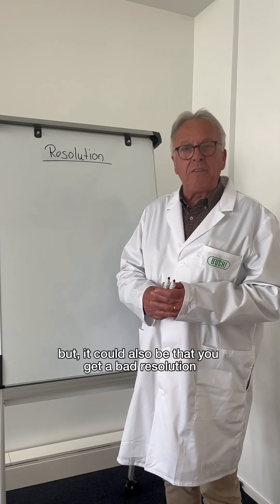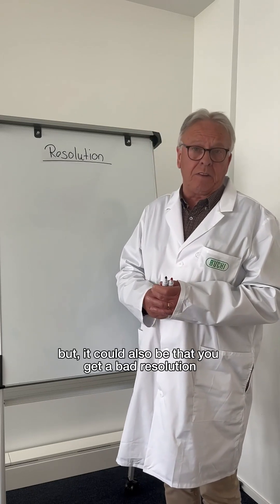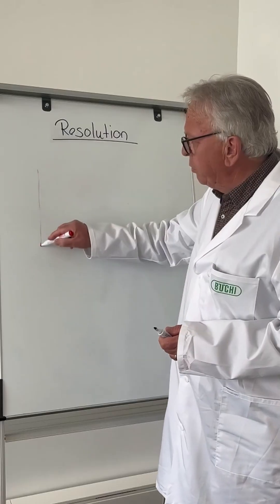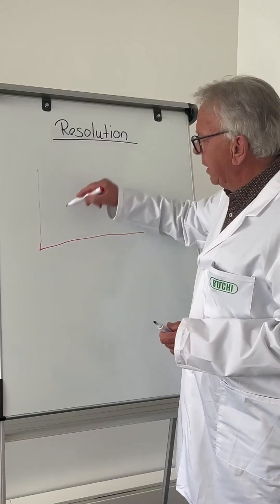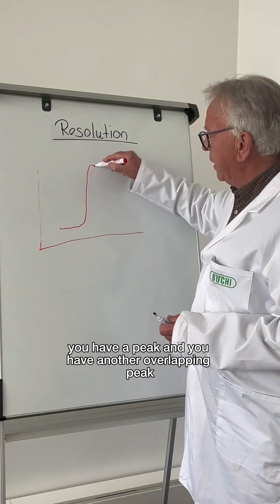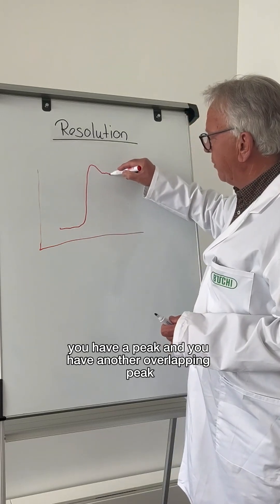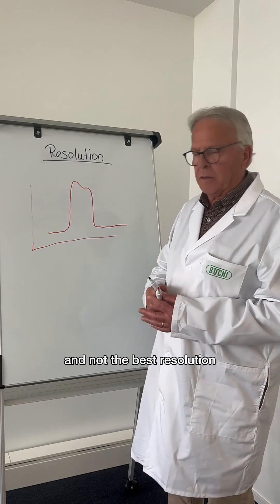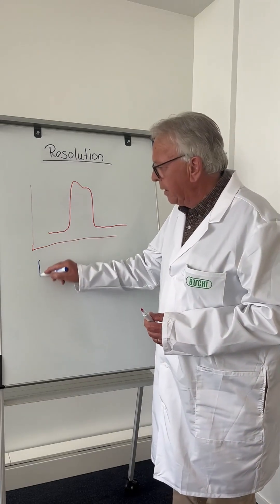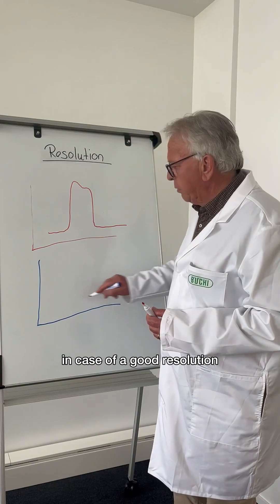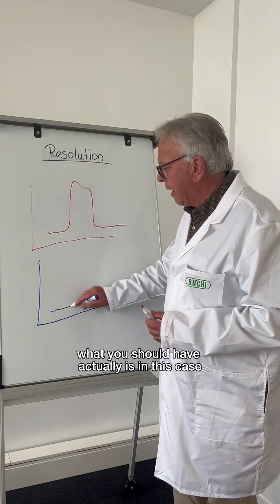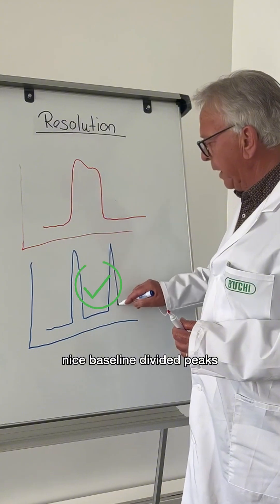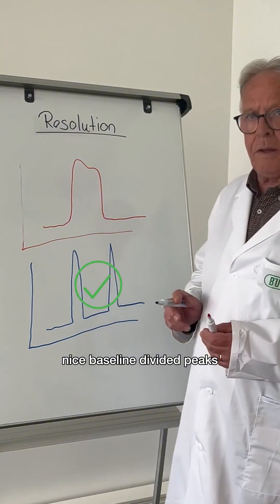But it could also be that you get a bad resolution. A bad resolution could look a little bit like this — you have a peak and you have another overlapping peak. This is not the right separation and not the best resolution. In case of a good resolution, what you should have is nice baseline divided peaks.